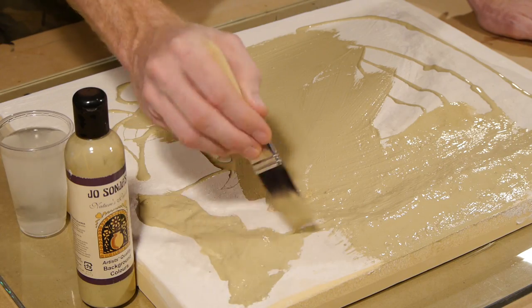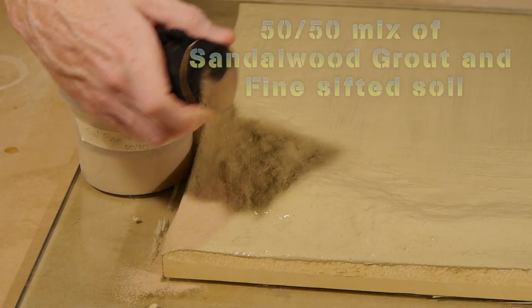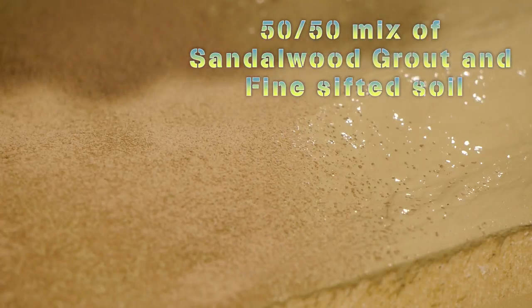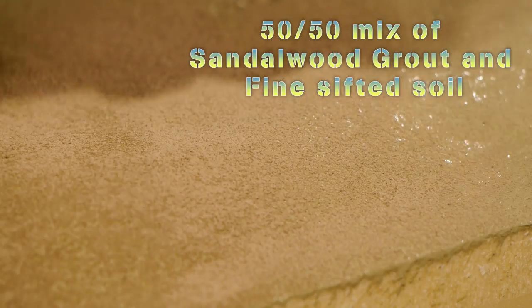The base gets a liberal coating of an earth coloured paint and before it dries I cover the area with my dirt texture sifted through a stocking. The paint acts like a glue and holds the base layer in place.